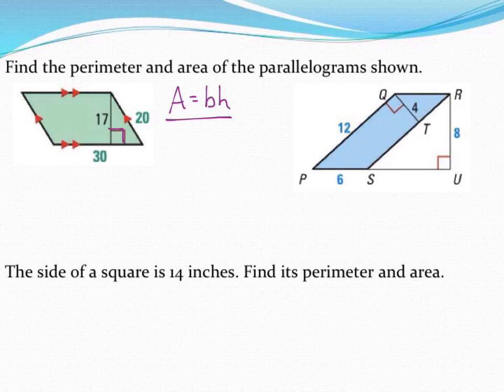So to find the area of this first parallelogram I'm going to take the base which we'll call 30 and the height which is perpendicular to that base is 17. Now be careful that you don't use 20 as your height, that is not perpendicular to the base so we cannot use that side. So multiplying 30 by 17 gets us an area of 510.